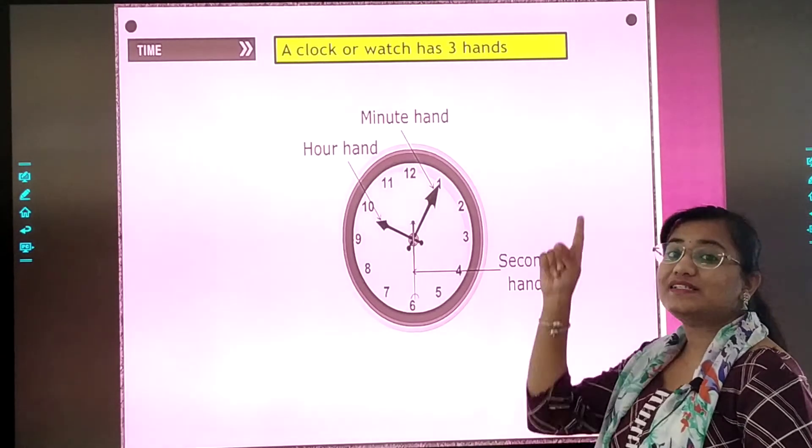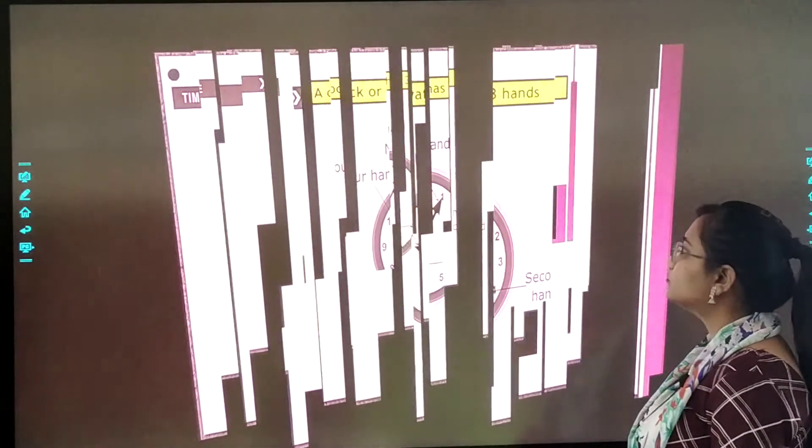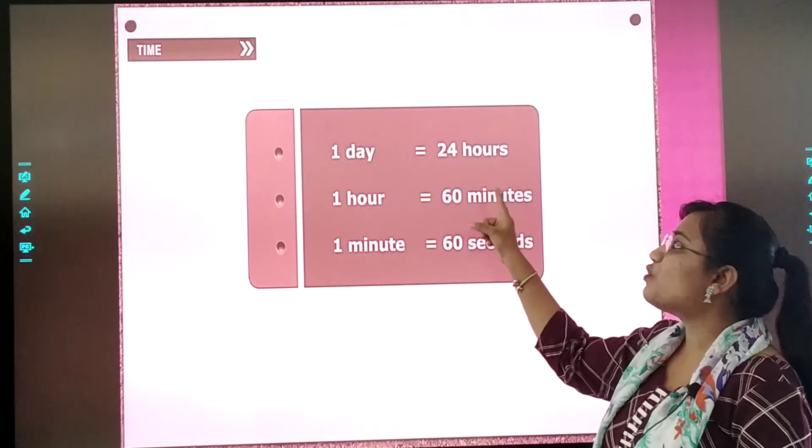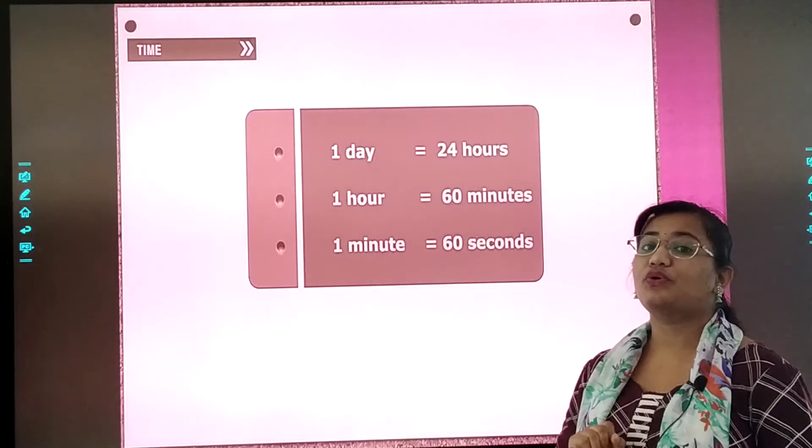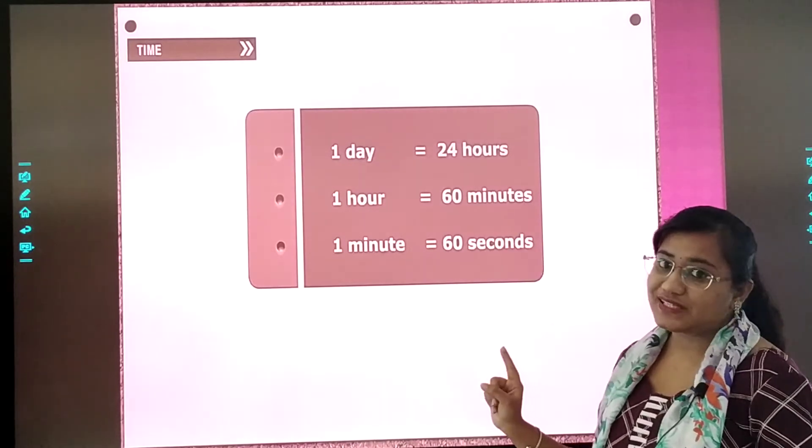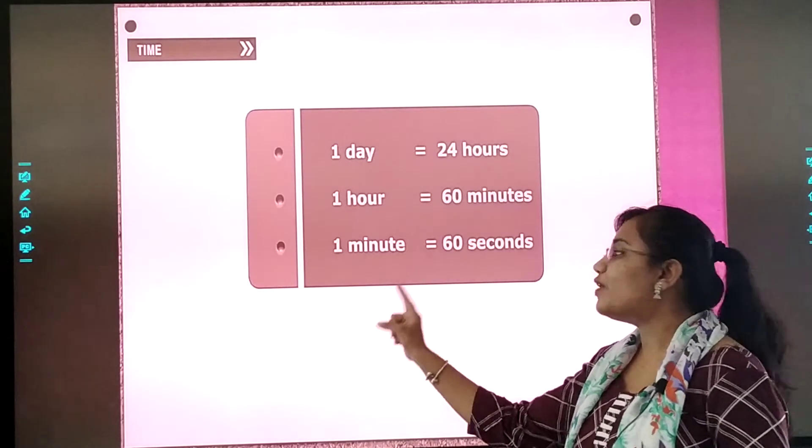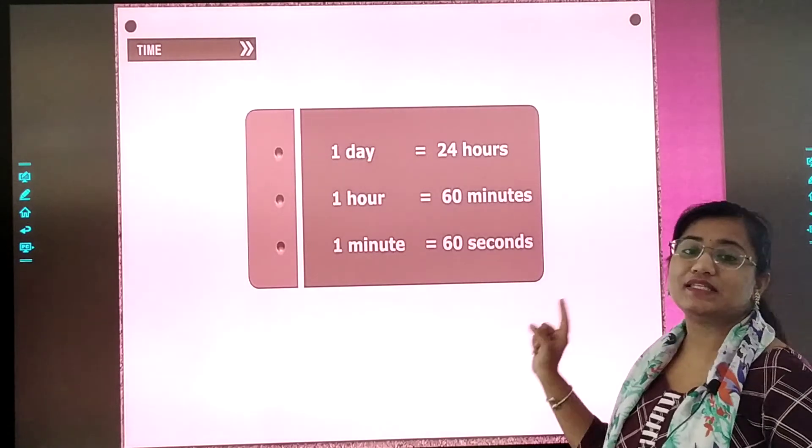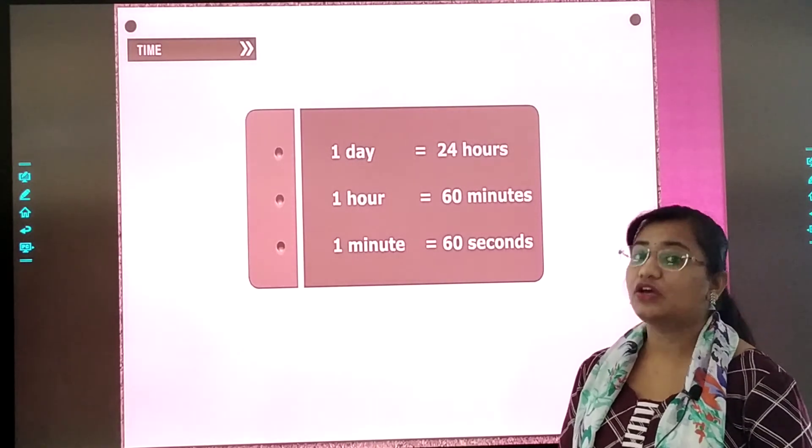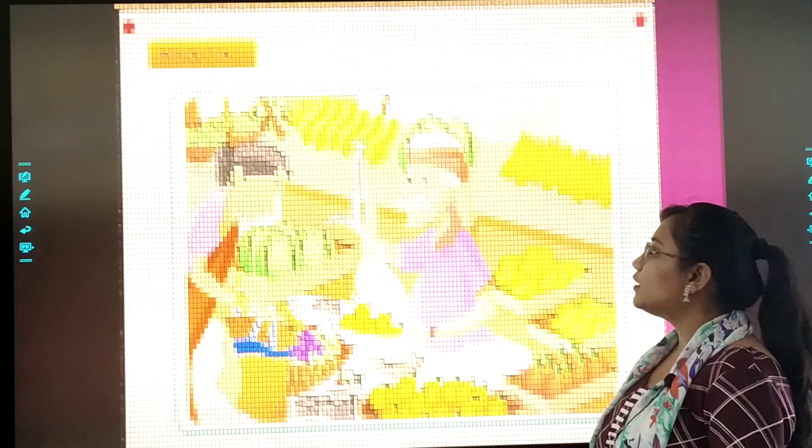And the units are seconds, hour and minutes. Okay? One day has twenty-four hours. Har din mein twenty-four hours hote hai. One hour has sixty minutes. And each hour is having sixty minutes. And one minute is equals to sixty seconds. Dear children, keep all these things in your mind. Ye aapko general knowledge mein aur time ko kaise dekhna hai. Woh seekhne mein aapki help karta hai. Okay? Now it is time.